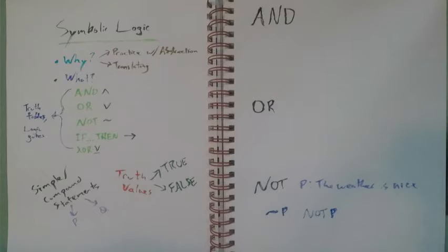All right. NOT pretty simple. NOT, we don't even need multiple simple statements. It just takes one statement, whether that's a compound statement, or a simple statement, including just one. We take the truth value and we return the opposite of that truth value.